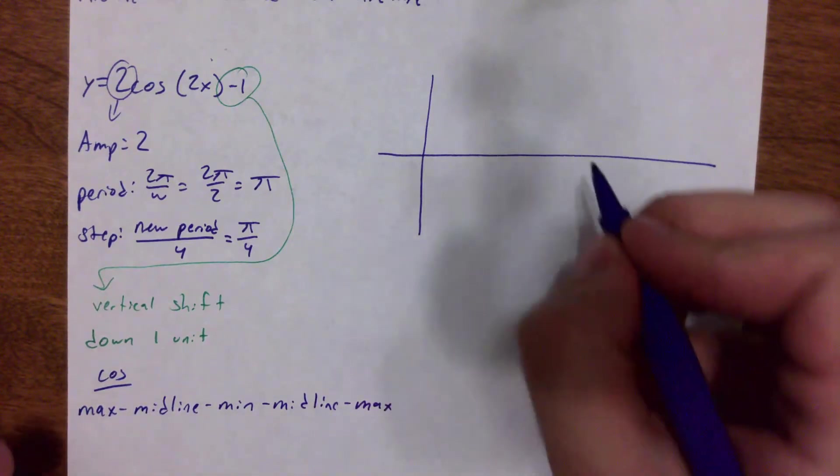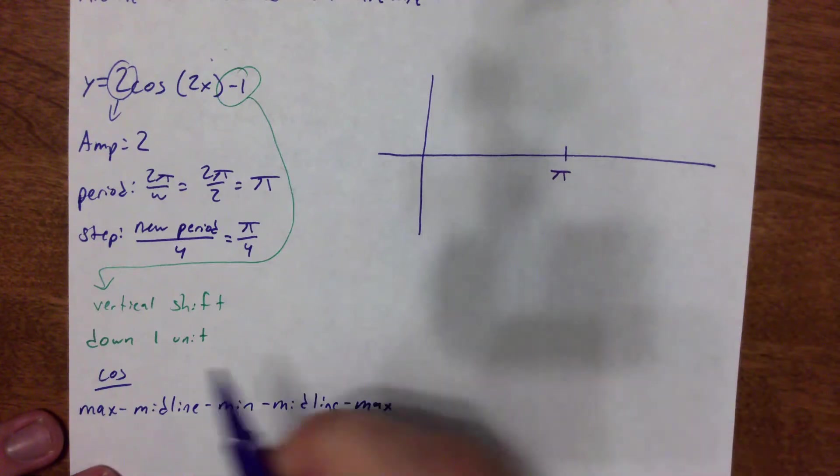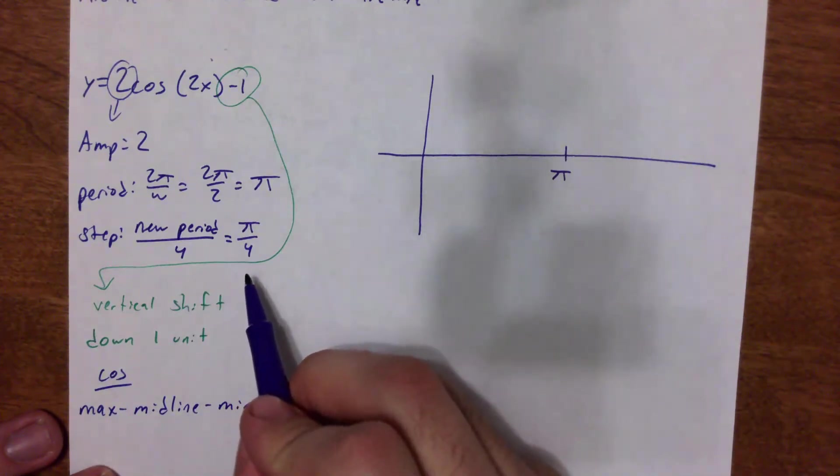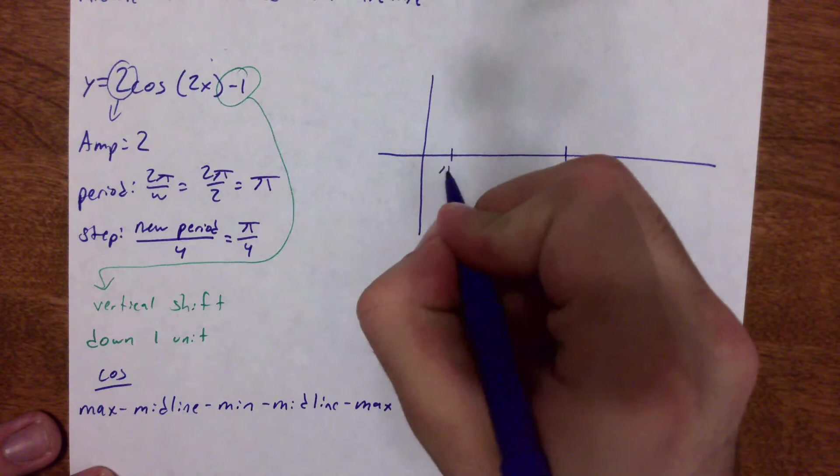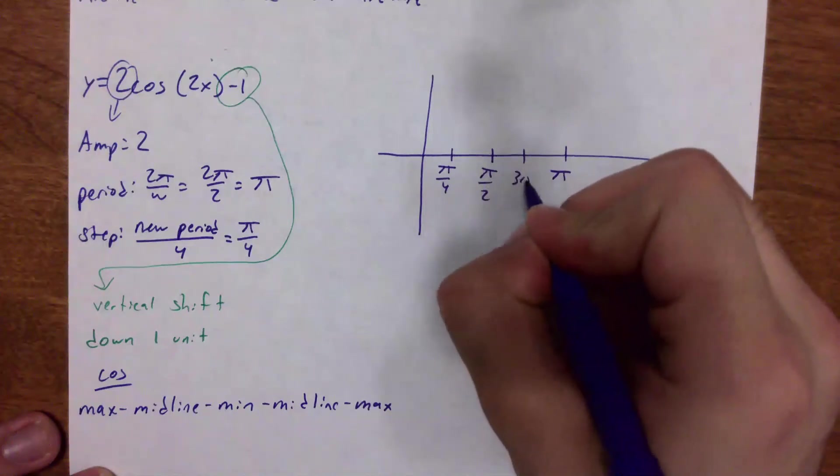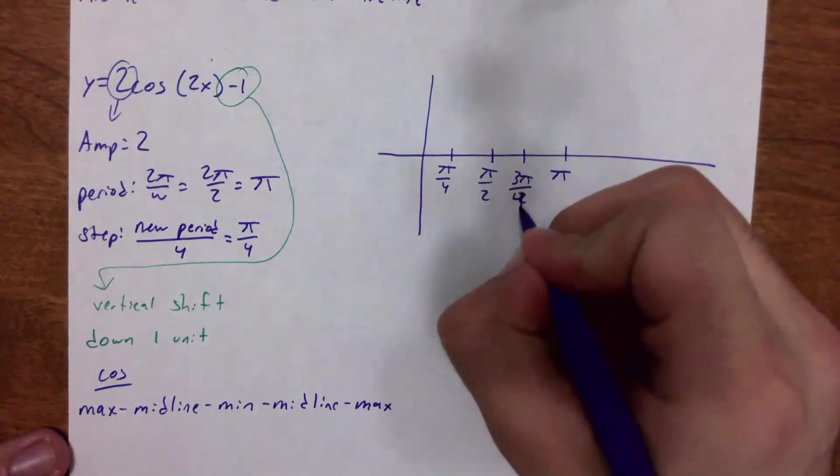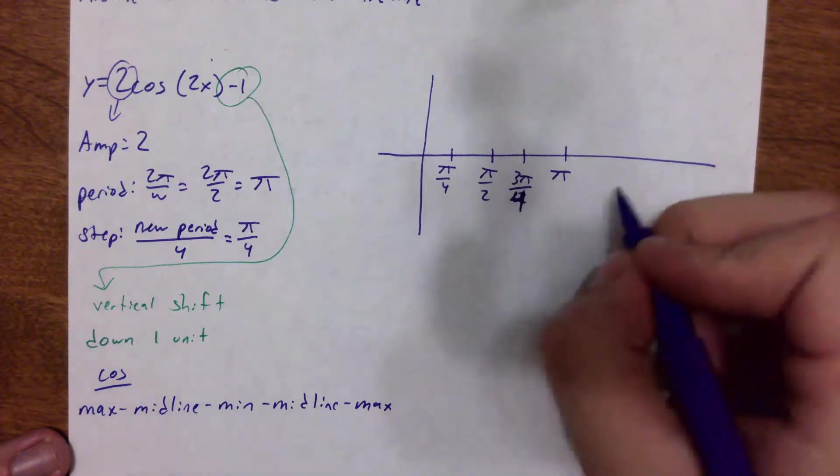So again, I'm going to cut off, hey, here's my period, which is π. And my step is going to be π over 4. So I've got π over 4, 2π over 4 becomes π over 2, and then 3π over 2, sorry, 3π over 4. And that's one period.